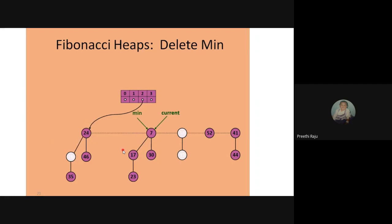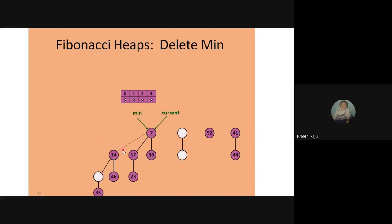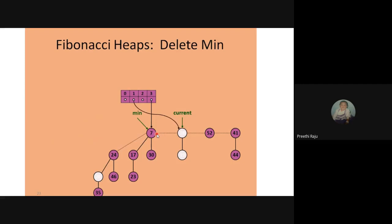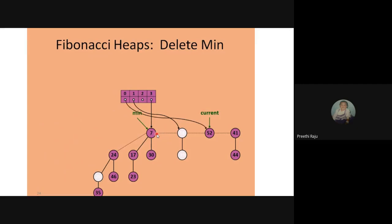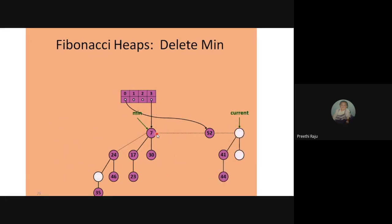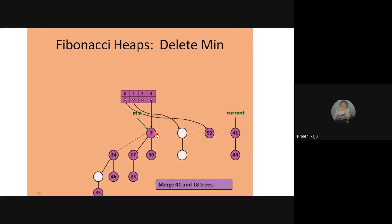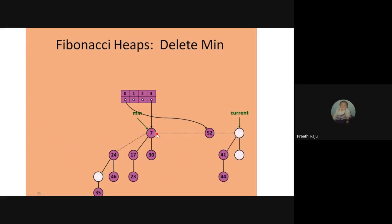Node 24 is brought as another child of node 7. Now 7 has degree 3, placed in slot 3. The current pointer moves to 18. Node 18 with 39 has degree 1 and is moved to buffer slot 1. Node 52 goes to slot 0. There is a clash again at degree 1 — nodes 18 (with 39) and 41 (with 44) have the same degree. Since 18 is smaller, it stays as root and 41 is added to the left of 18's root as its child.